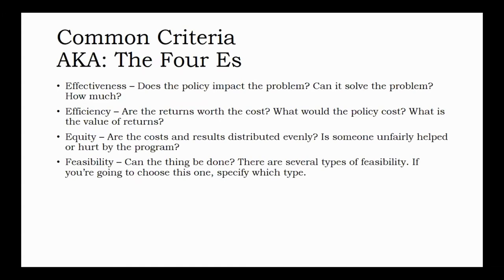There are many criteria for you to choose from; these are the most basic and most commonly used. To help people remember these criteria, I jokingly refer to them as the four E's, even though one of them starts with an F. The first one is effectiveness. Your textbook refers to this as hitting the target. Effectiveness refers to whether and how much the alternative will impact the problem — how well will that alternative help achieve the desired end state? Examples include whether a policy reduces the number of people sleeping on the street, increases the use of public transit, or slows down transmission of a virus.